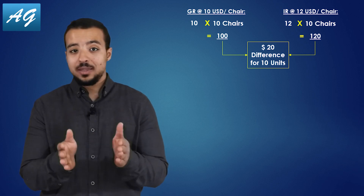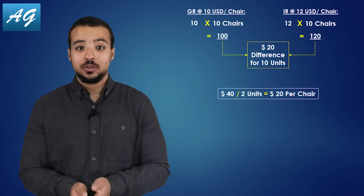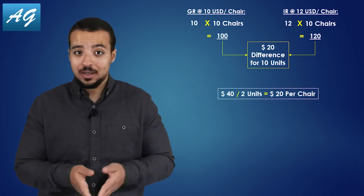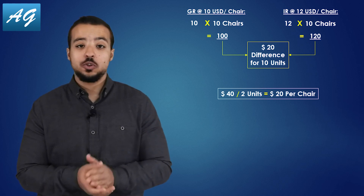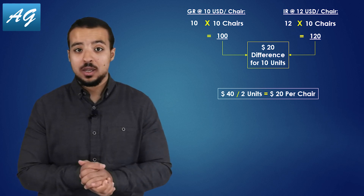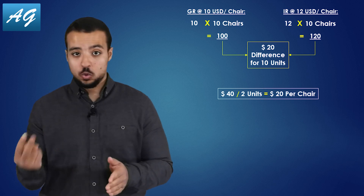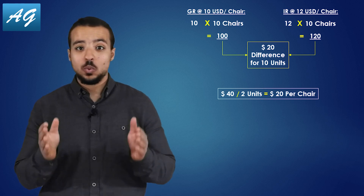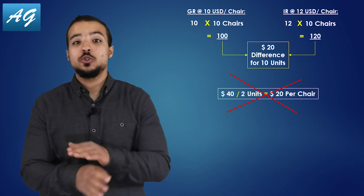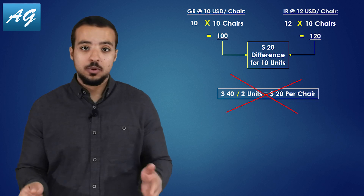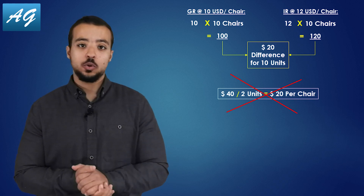Now, if we add the 20 USD to our stock account — where we only have 2 units remaining — then the total stock value is going to be 40 USD and the stock quantity is 2 units, so the moving average would be 20 USD per share, which is completely wrong because the moving average should be 12 USD per share only.